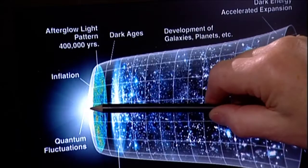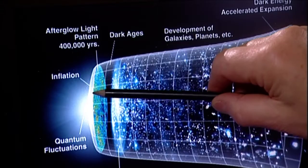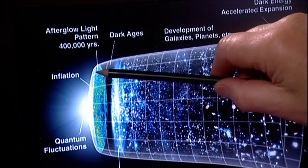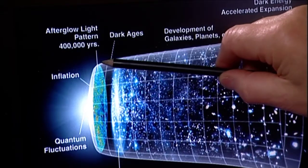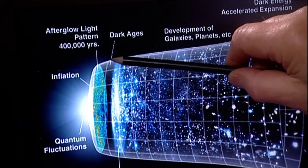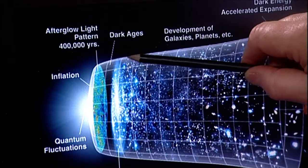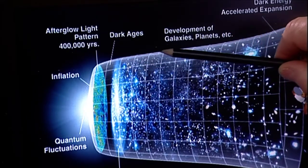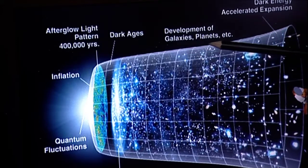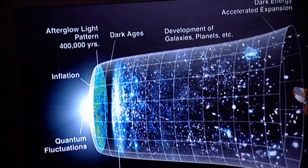Our current thinking about how the big bang has been developed is nothing short of amazing. First, there is a brief period of very, very rapid expansion, which we call inflation. That gets switched off, and then we get the normal sort of expansion we see today — the Hubble expansion. Edwin Hubble was the astronomer who first discovered the universe was expanding.